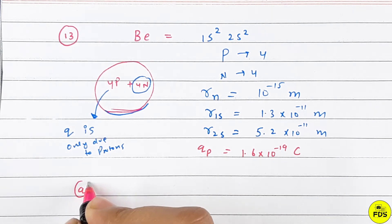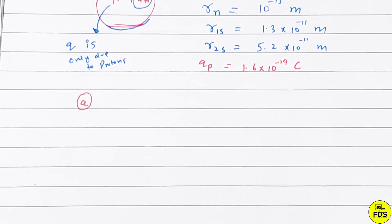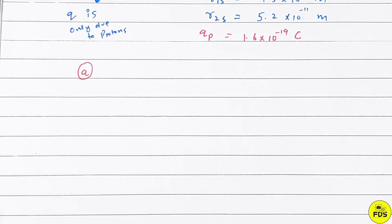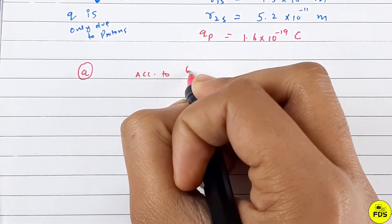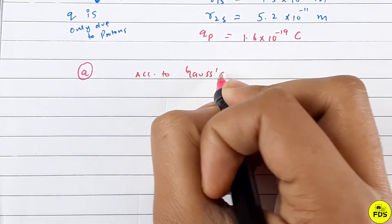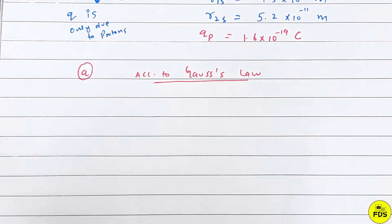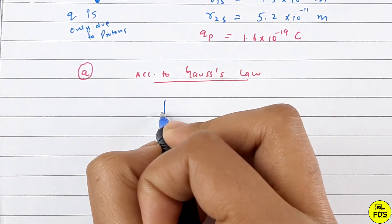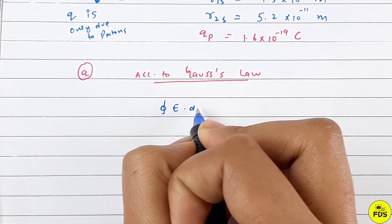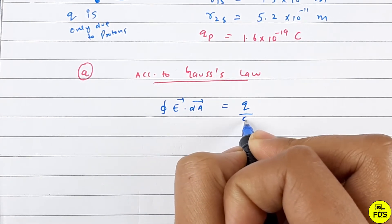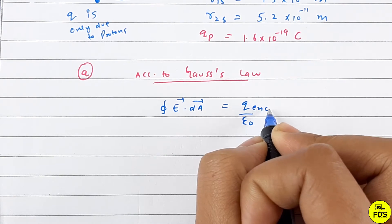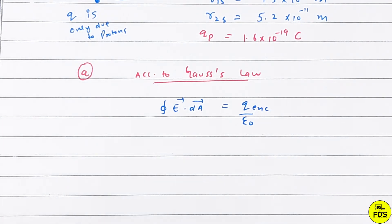For the first part, we need to find the electric field just inside the 1s cloud. You know the formula for electric field - the integral E·dA equals q_enclosed divided by epsilon naught, so we need the enclosed charge.